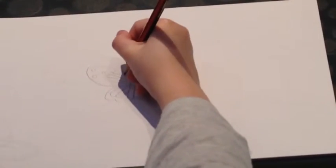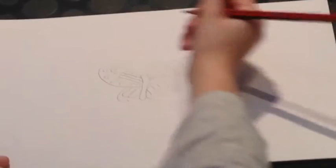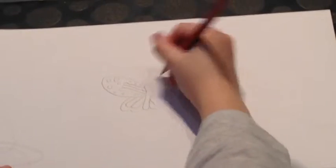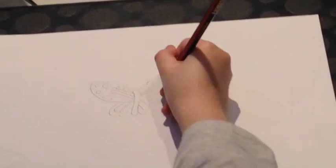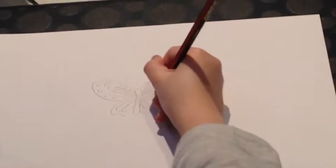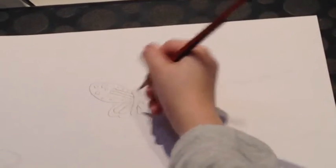And then you draw some circles, and maybe get some smaller ones down here. And then the little wings.